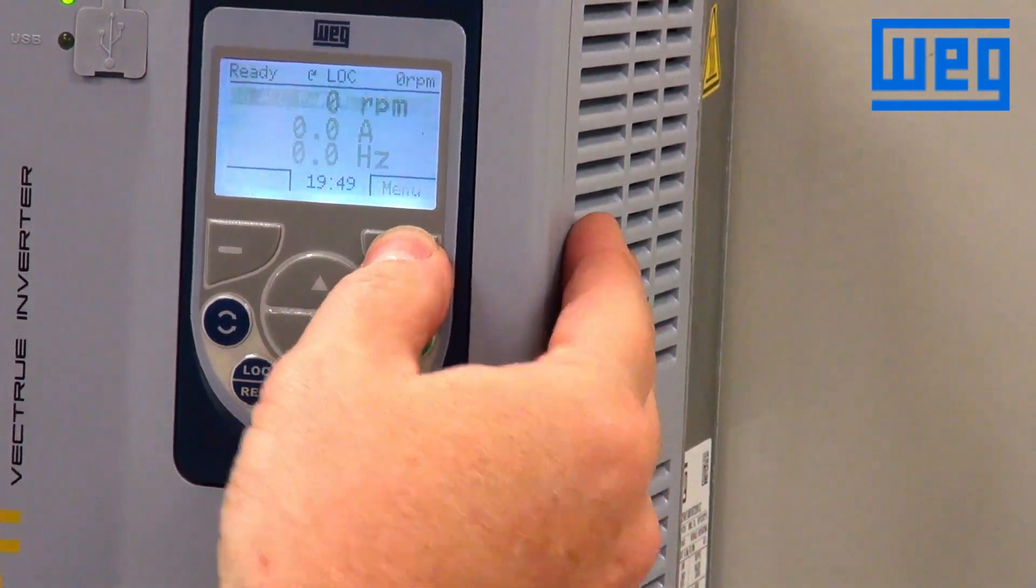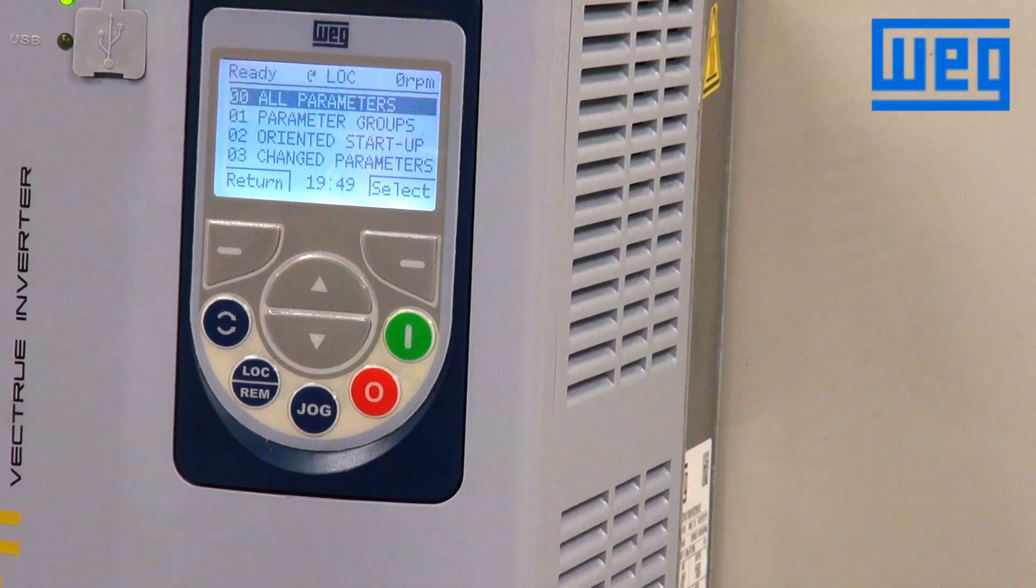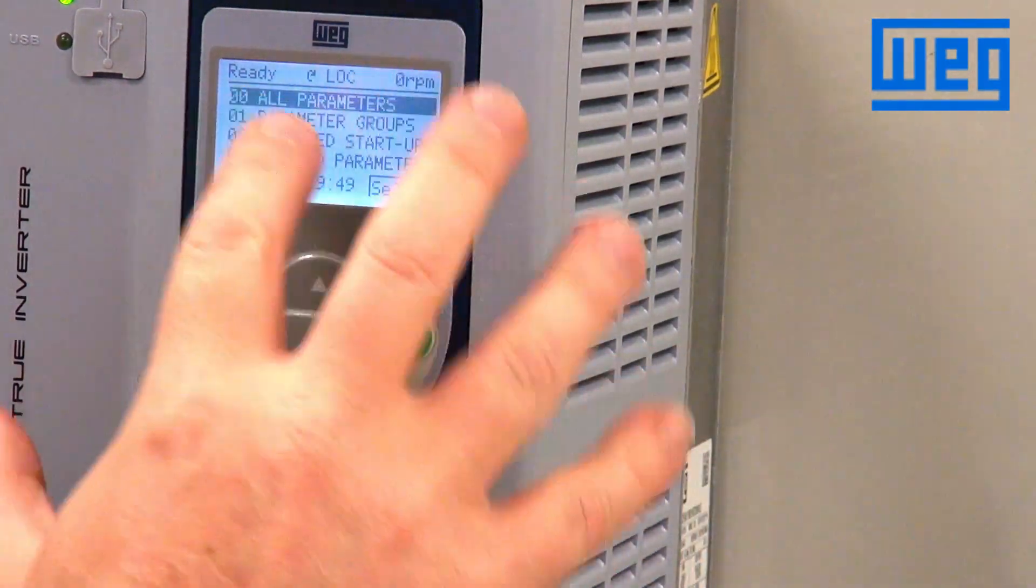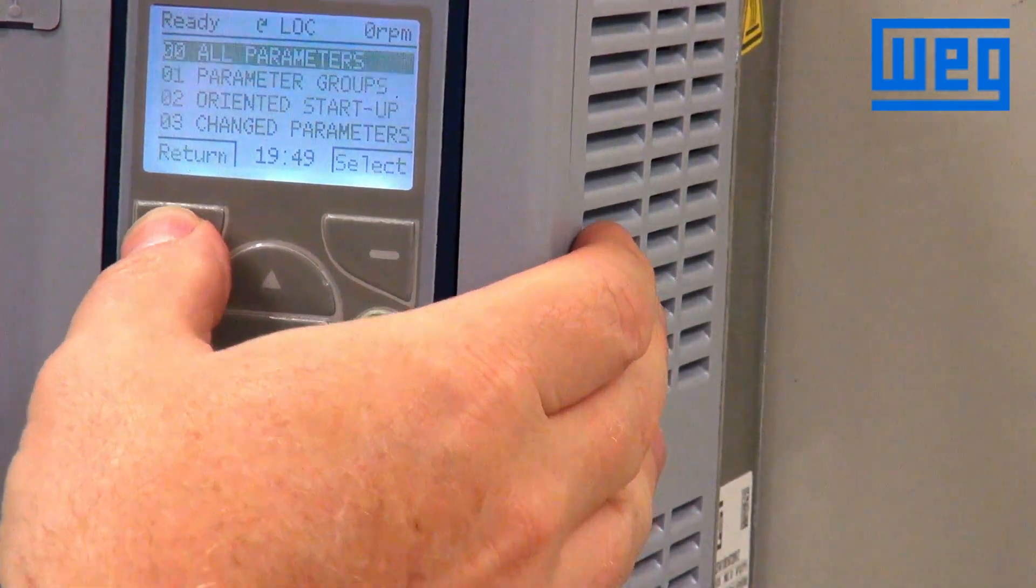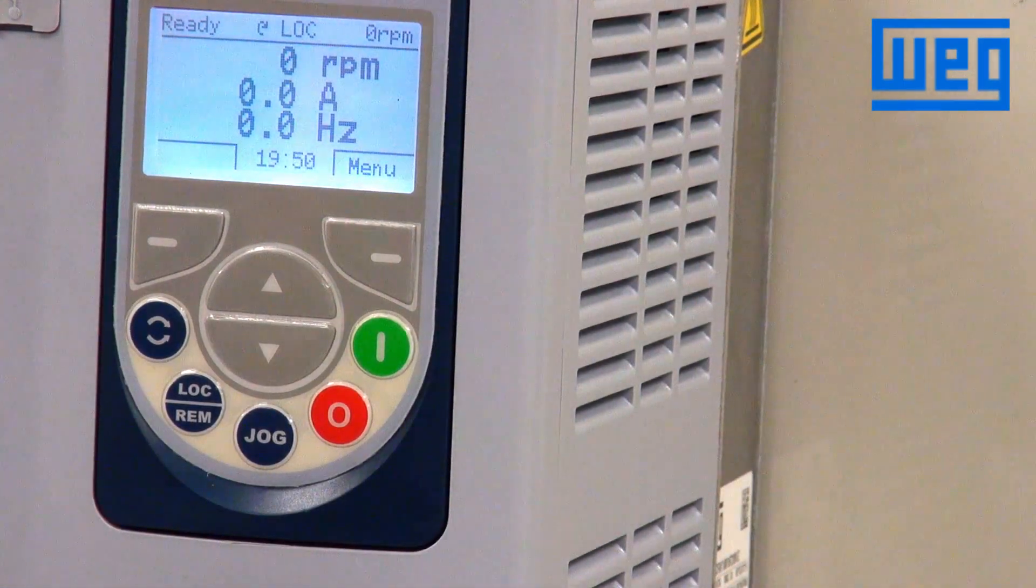If we press the right soft key, we will go into the menu system. As we see, the orientation of the soft keys do change, so if we press return, we go back to the main display.